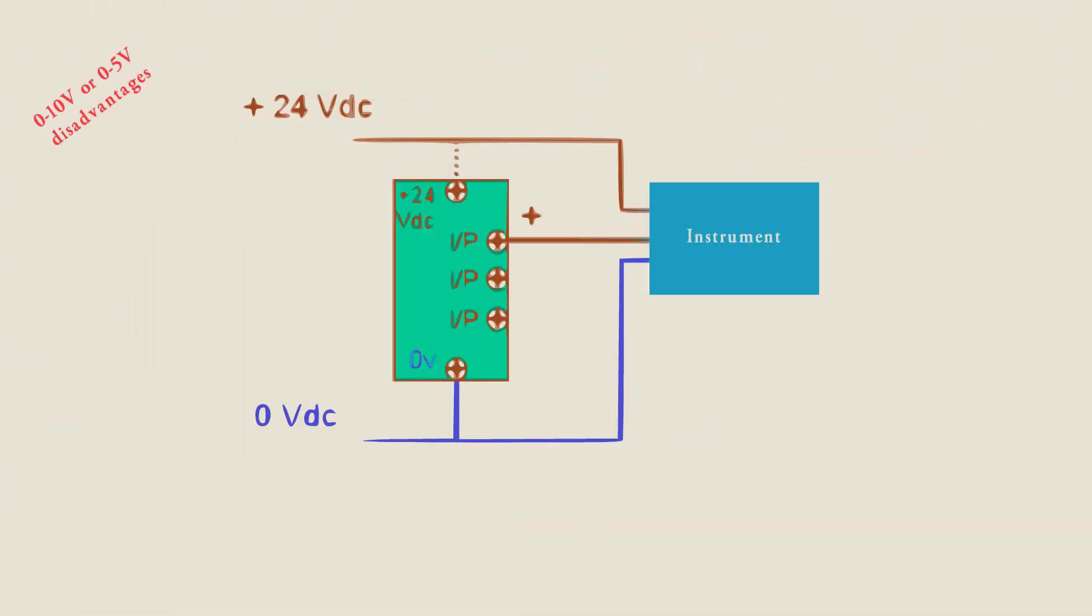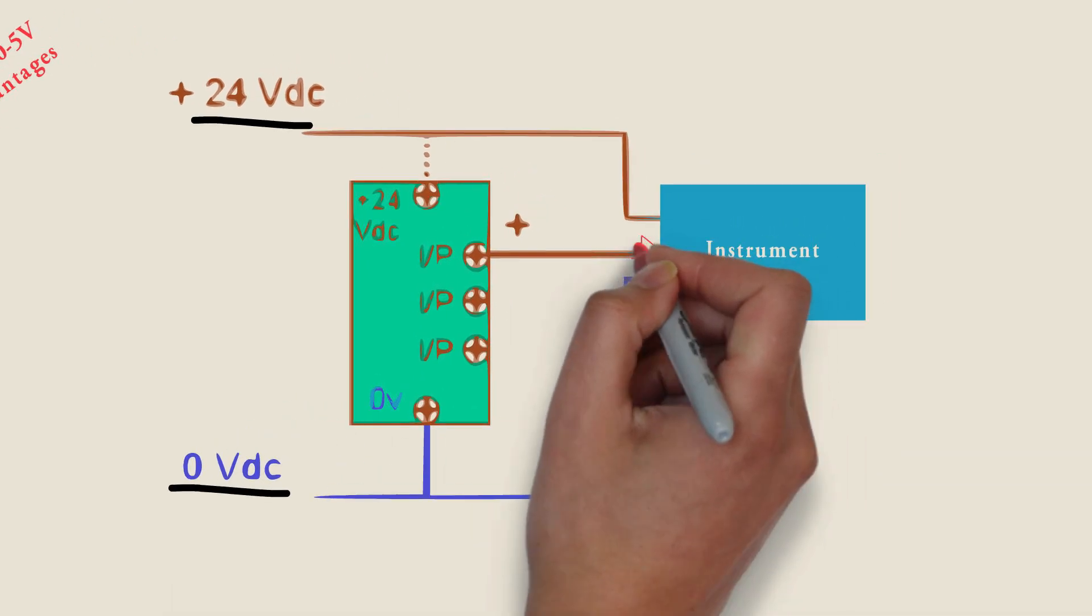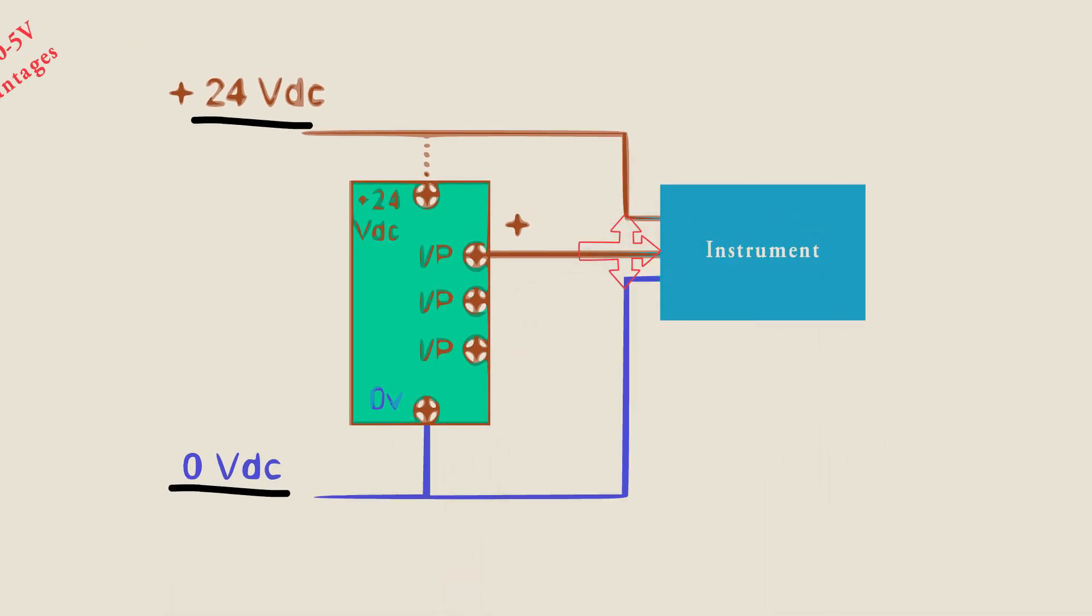A separate power supply to the instrument is usually required, meaning the sensor requires at least 3 wires.